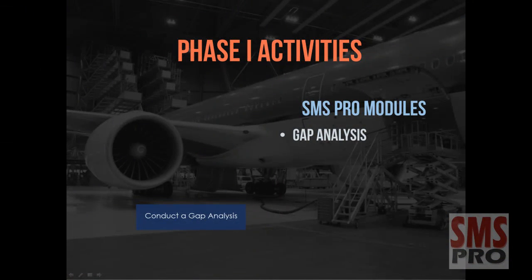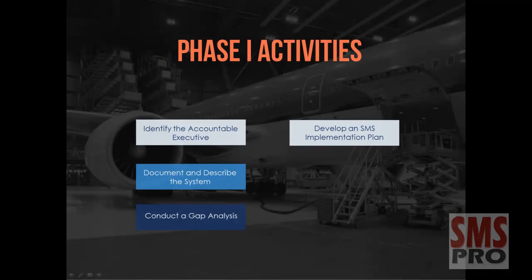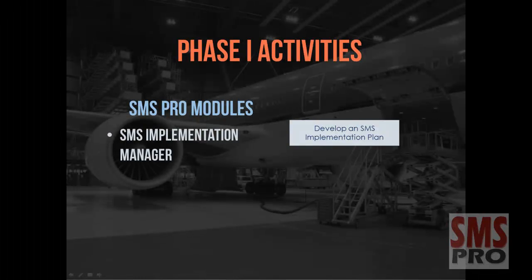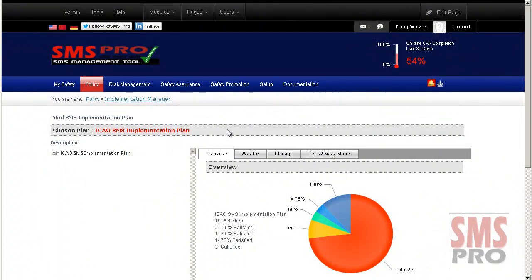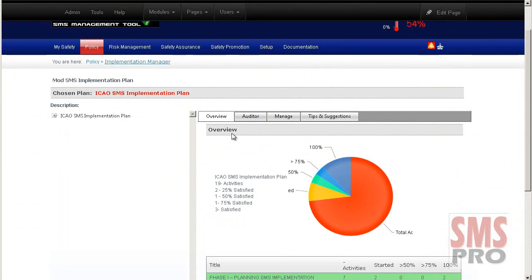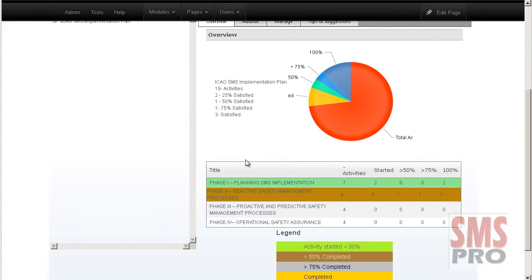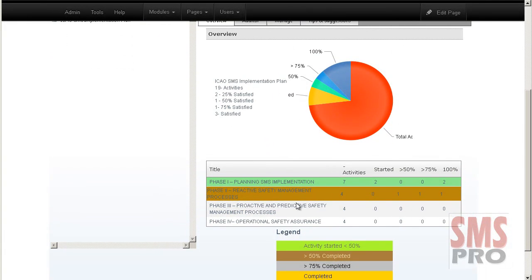Results from the gap analysis provide necessary information for developing detailed plans to improve existing safety management processes. These plans evolve into the SMS implementation plan, which will include timelines and priorities of key safety activities. Using the implementation plan module, you can review the level of completion for all of your activities and phases.